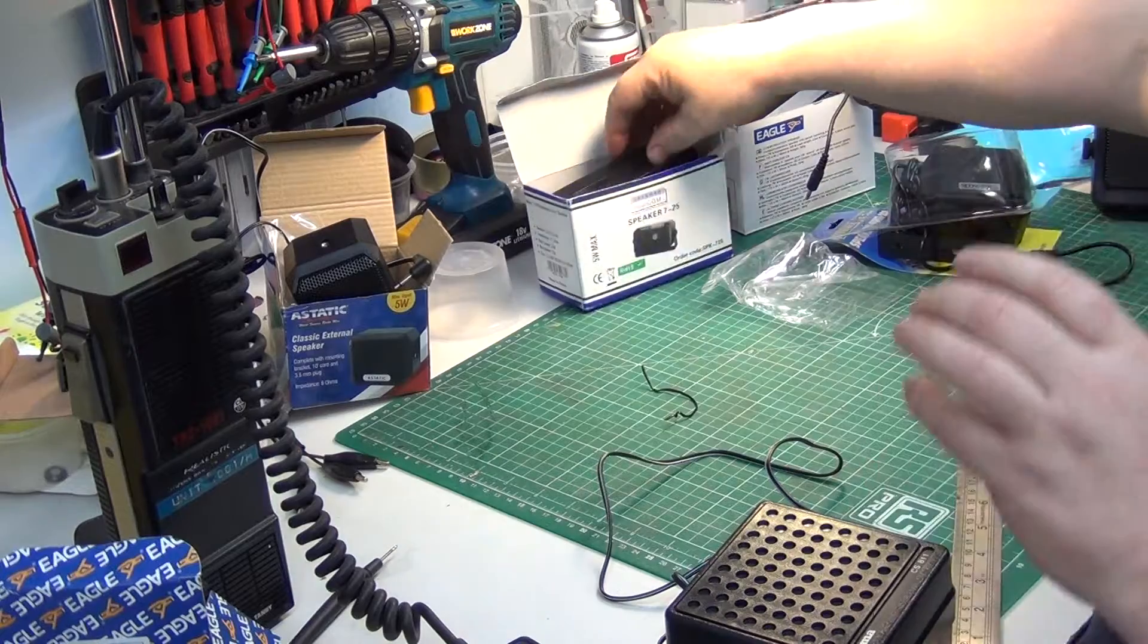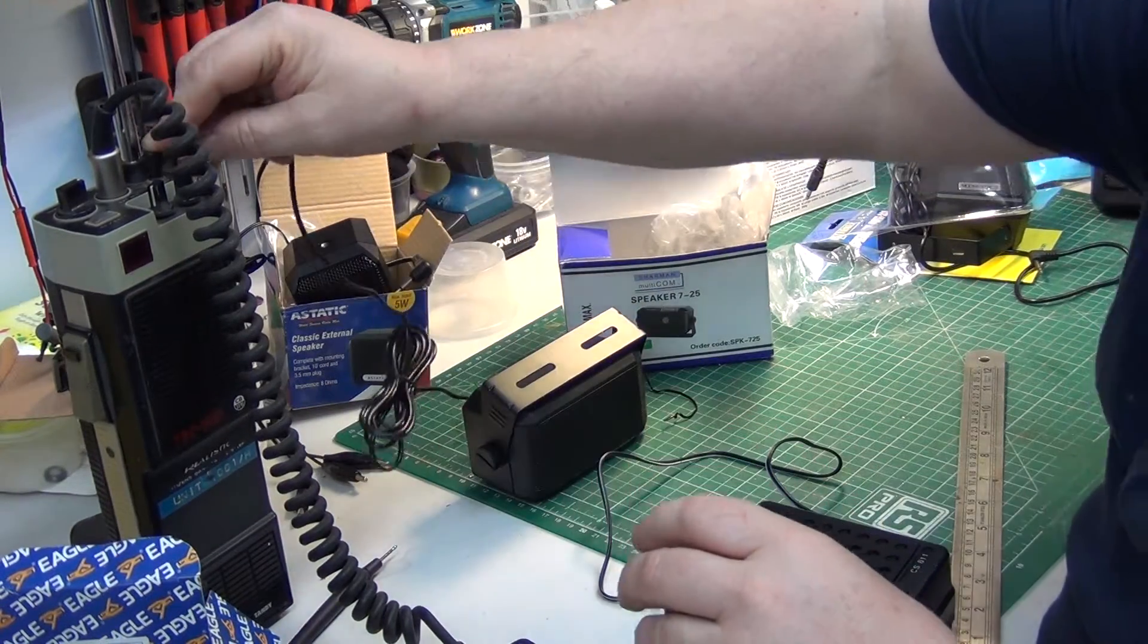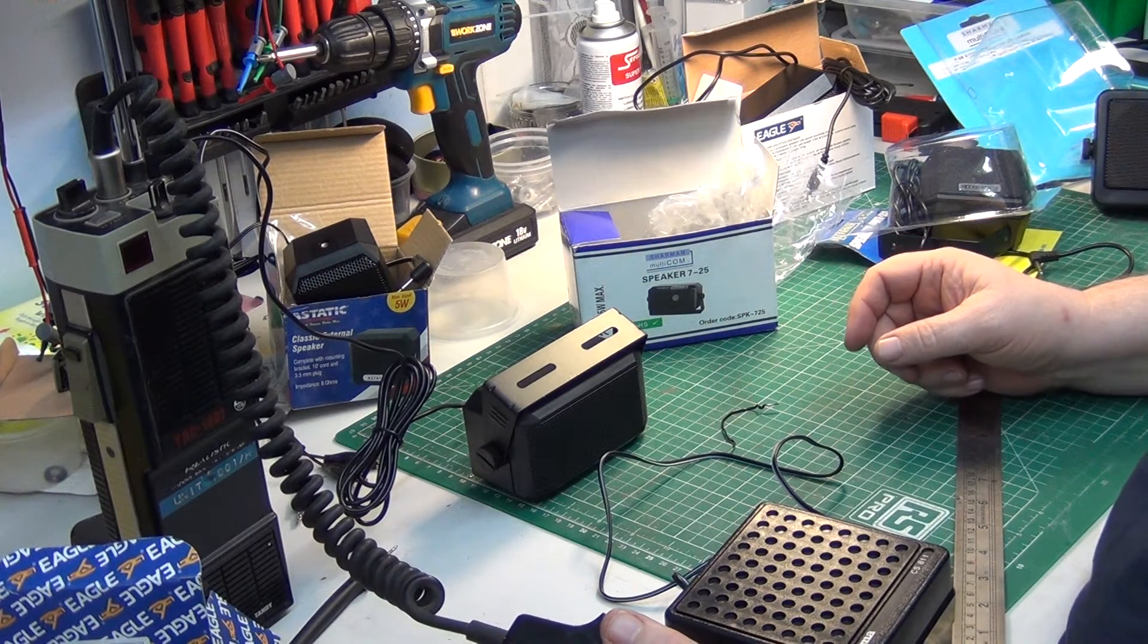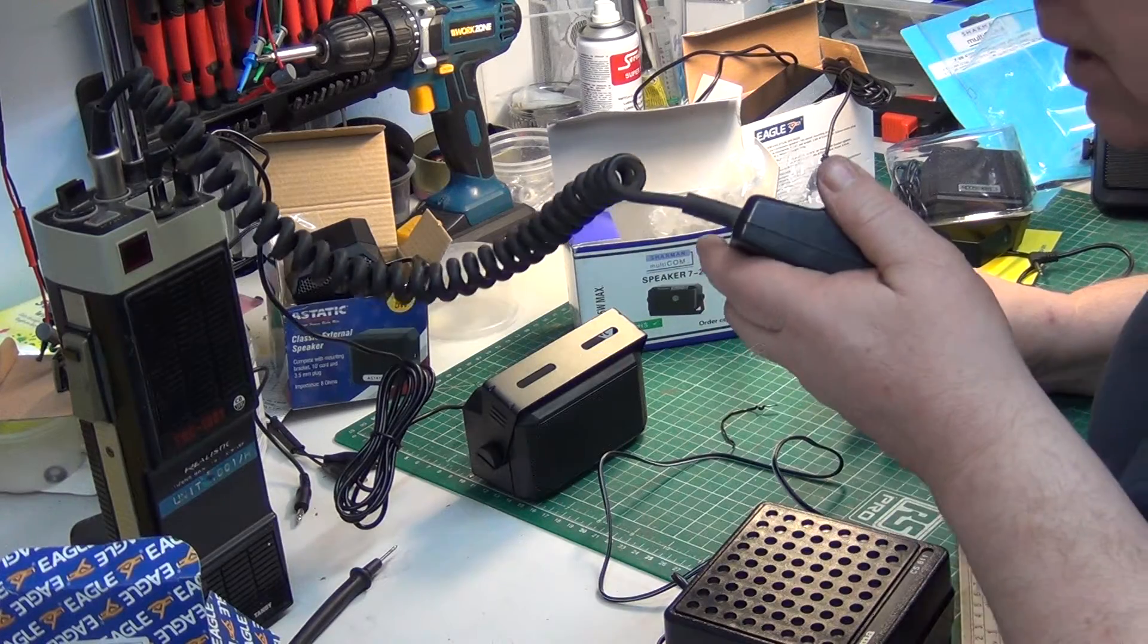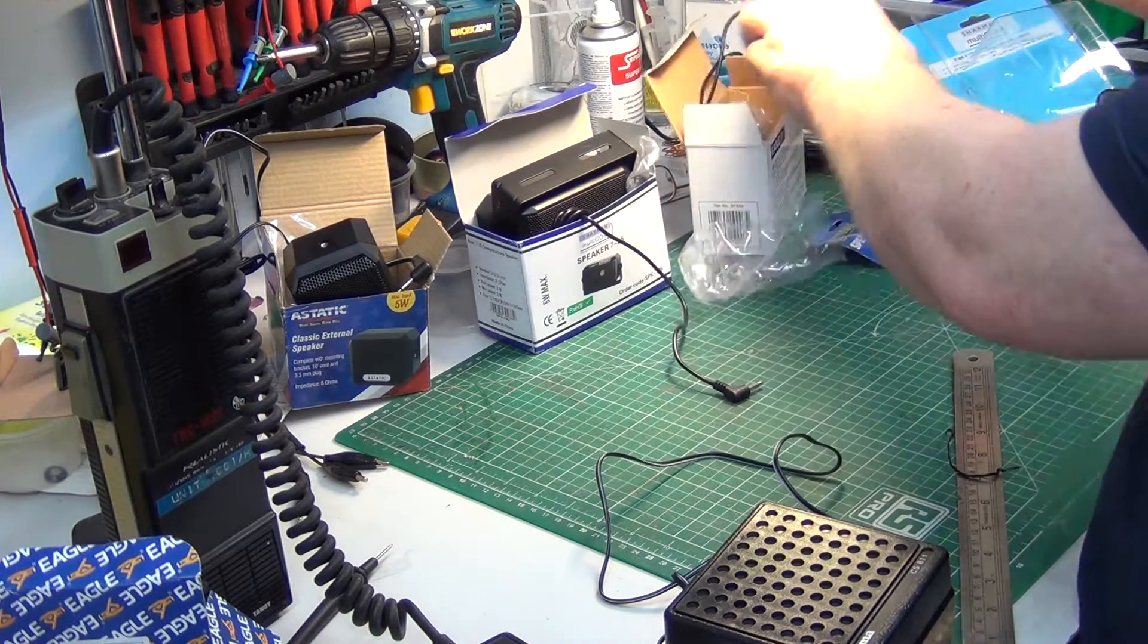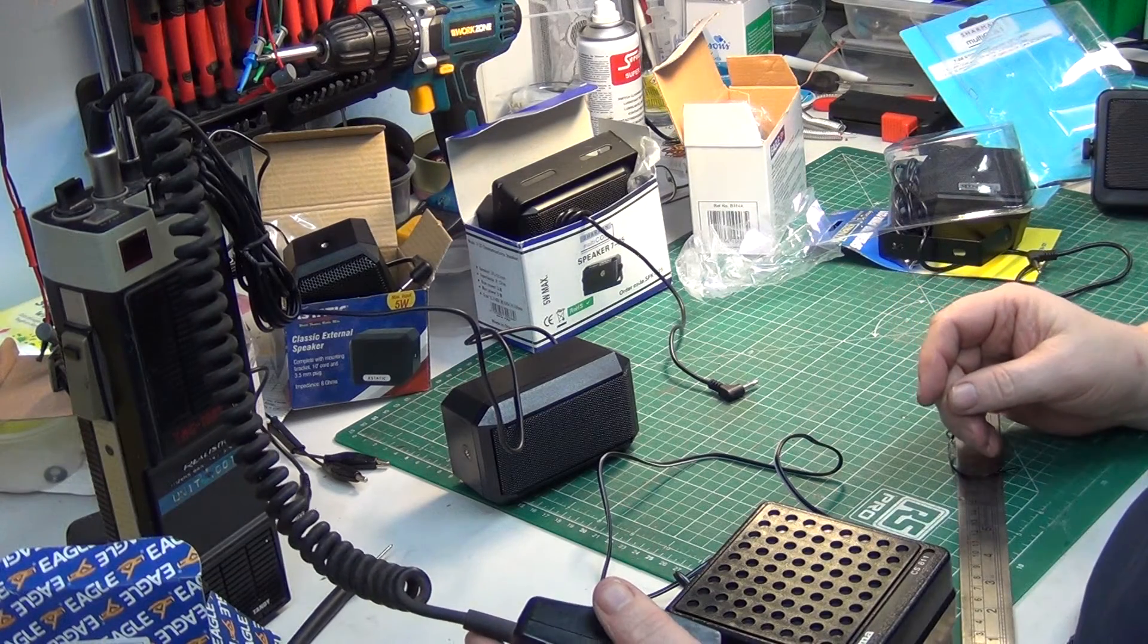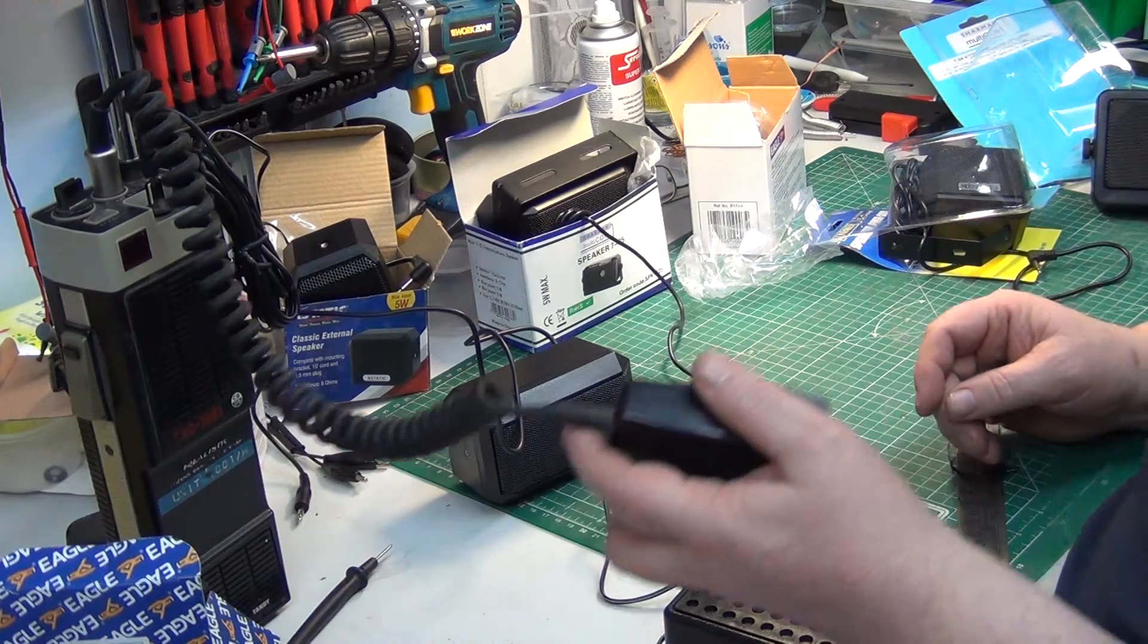So back to the one that Mark likes. This is the screen cable version, the Shaman's one. Tango 21, next test. Testing, 1, 2, 3, 4, 5, 5, 4, 3, 2, 1. Roger, thank you. So back to the Eagle version of a similar thing. Both have screen leads, this has a straight plug. Next test. Testing, 1, 2, 3, 4, 5, 5, 4, 3, 2, 1. Roger. So that's your Eagle one.